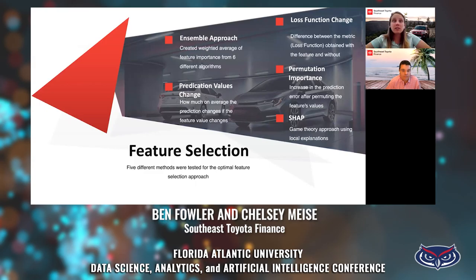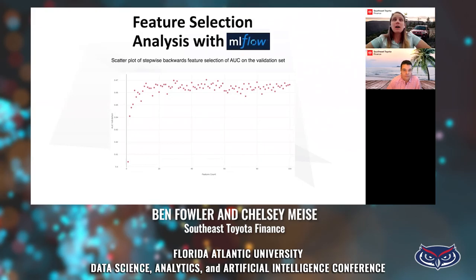We tested prediction value change, which is how much on average the prediction changes if the feature value changes, followed by loss function change, which is the difference between the metric obtained with the feature and without. We also tested permutation importance, where we measure the increase in prediction error after permuting the feature's values, and finally SHAP, which is a game theory approach using local explanations.